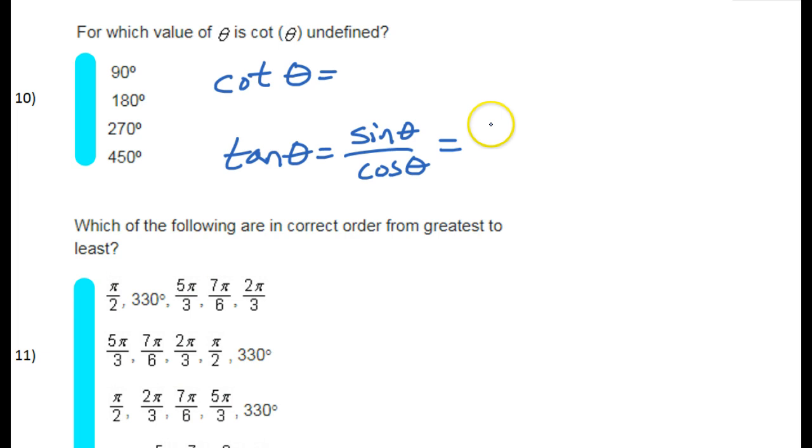Another way to think of it is y over x. When we're talking about the unit circle, if you imagine a triangle, if you imagine a point here, this is x and y.